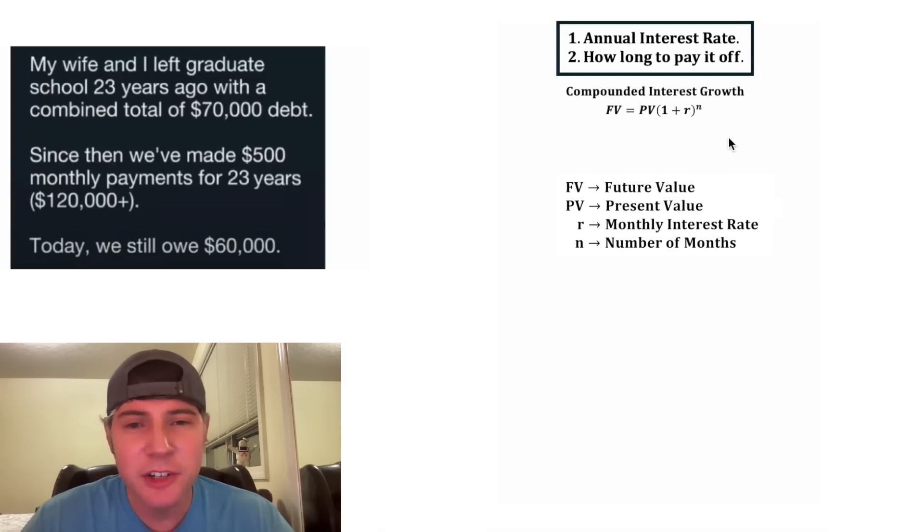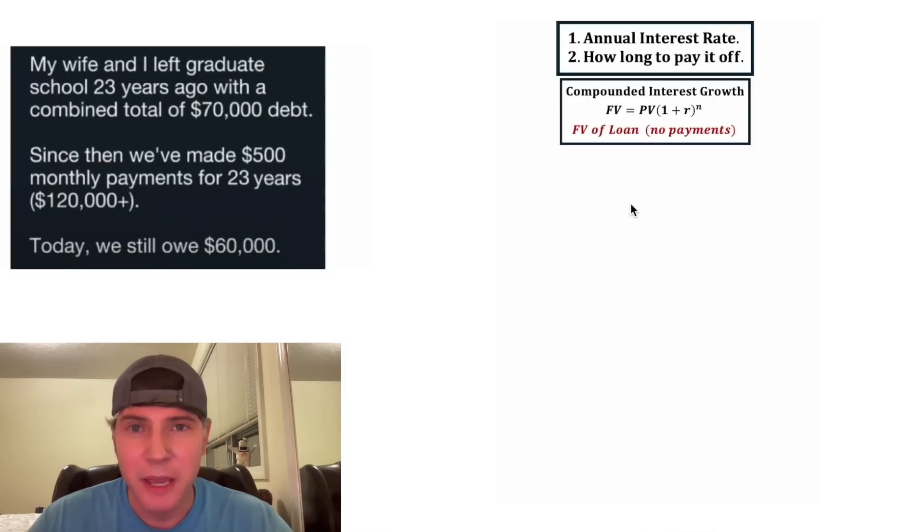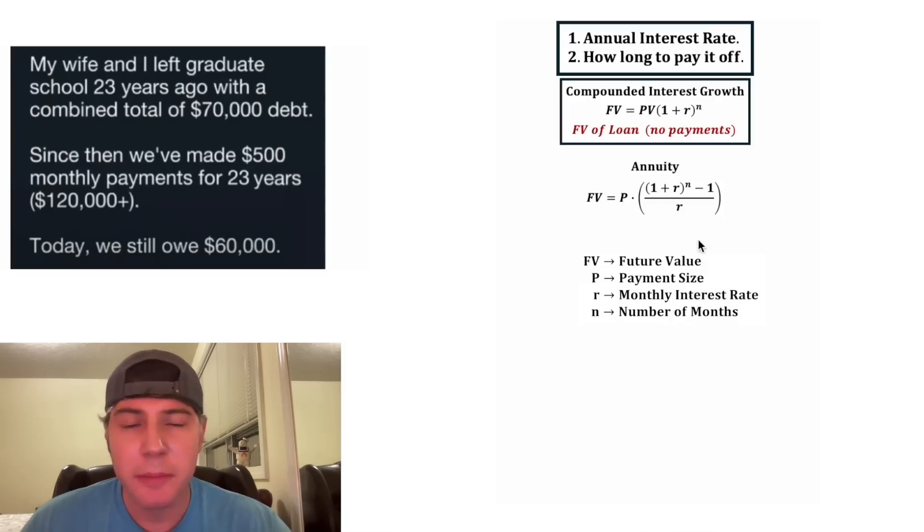So first, let's look at the compounded interest growth formula. It says the future value is equal to the present value times one plus the monthly interest rate to the power of the number of months. If we were to use this formula, the present value would be the $70,000 that it started with and the future would be the $60,000 that it is today. But this only works if there's no monthly payments. Since there are monthly payments being made, we're interested in an annuity.